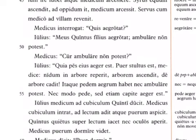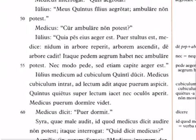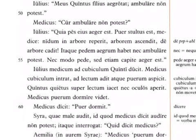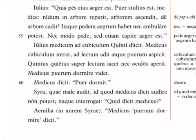Iulius medicum ad cubiculum Quinti ducit — Julius leads the doctor to the bedroom of Quintus, or just to Quintus' bedroom. Medicus cubiculum intrat — the doctor enters the bedroom. Ad lectum adit — he goes to the bed. Atque puerum aspicit — and he looks at the boy. Quintus quietus super lectum iacet — Quintus lies still, quiet on top of the bed. Nec oculos aperit — nor does he open his eyes.